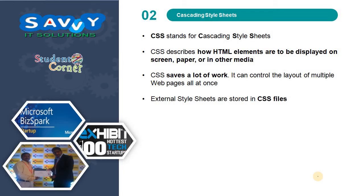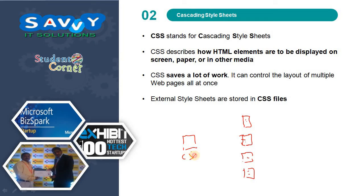CSS stands for Cascading Style Sheets. CSS describes how HTML elements are to be displayed on screen, paper, or in other media. CSS saves a lot of work — it can control the layout of multiple web pages all at once. External stylesheets are stored in CSS files. For example, if you want to design 100 web pages for a single website, designing one CSS file and calling it in all the pages gives a more reliable and efficient way of utilizing CSS.